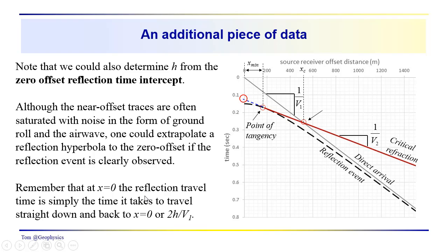There's an additional piece of information we can use. If we can see the reflection time intercept, we have an additional data point. In this horizontal layer case, the reflection time intercept is just the straight up-and-down travel time — equal to twice the thickness of the layer divided by the velocity in layer one. So it's simply 2H over V1.